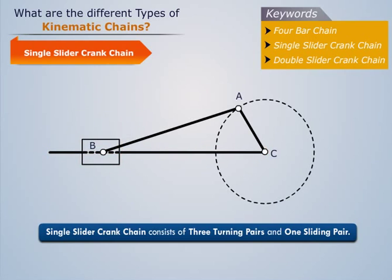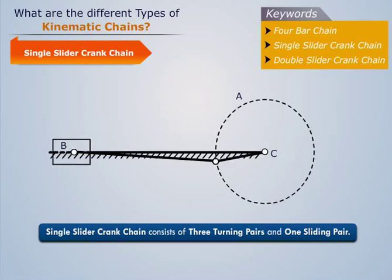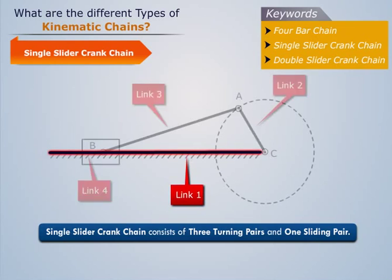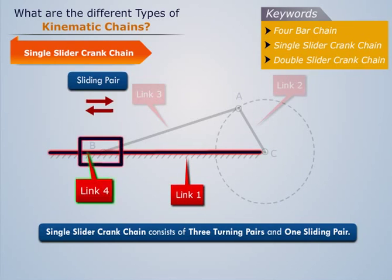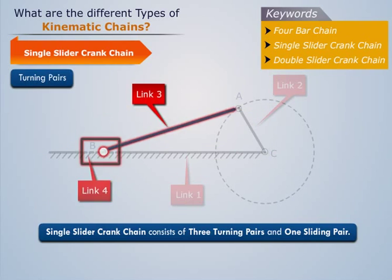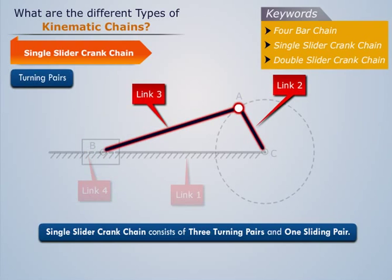It is basically used to convert rotary motion into reciprocating motion and vice versa. Consider the chain as shown. Here, link 1 and link 4 form a sliding pair, and the rest form the turning pairs.